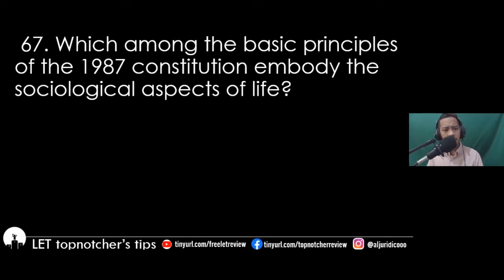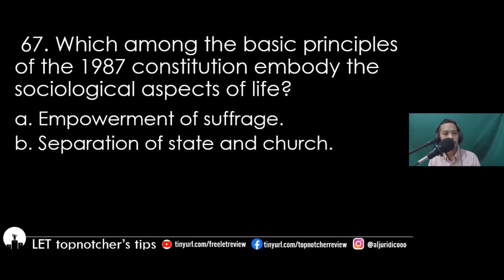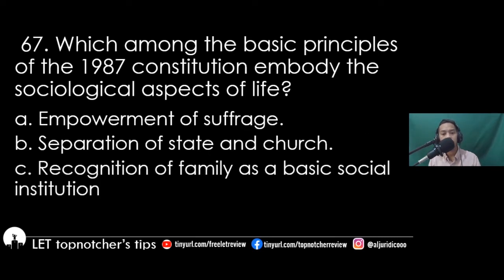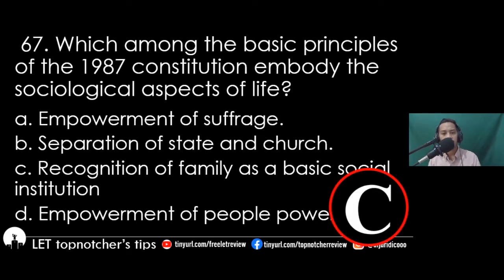Item 67: Which among the following basic principles of the 1987 Constitution embodies the sociological aspects of life? A) empowerment and suffrage, B) the separation of state and the church, C) recognition of family as a basic social institution, D) the empowerment of people power. The best answer is letter C, recognition of family as a basic social institution.